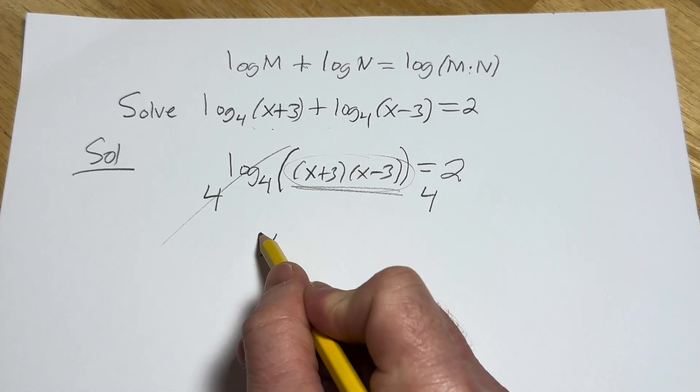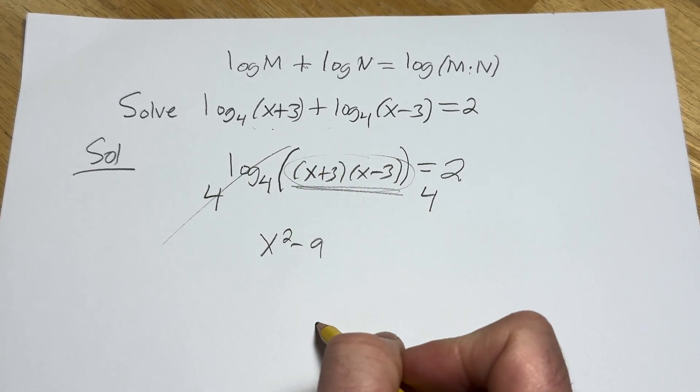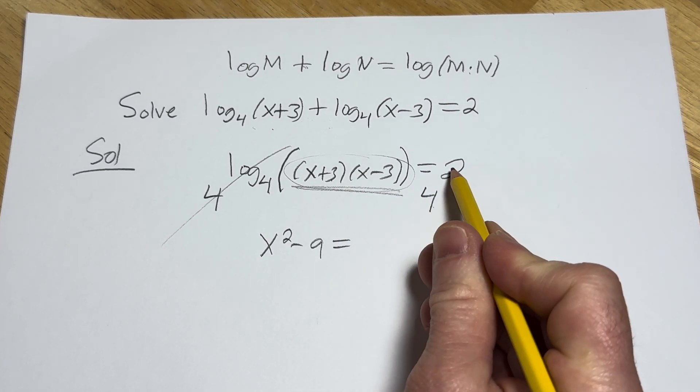which is the difference of squares, x squared minus 9, right? Because it's x squared minus 3 squared. And that's equal to 4 squared, which is 16.